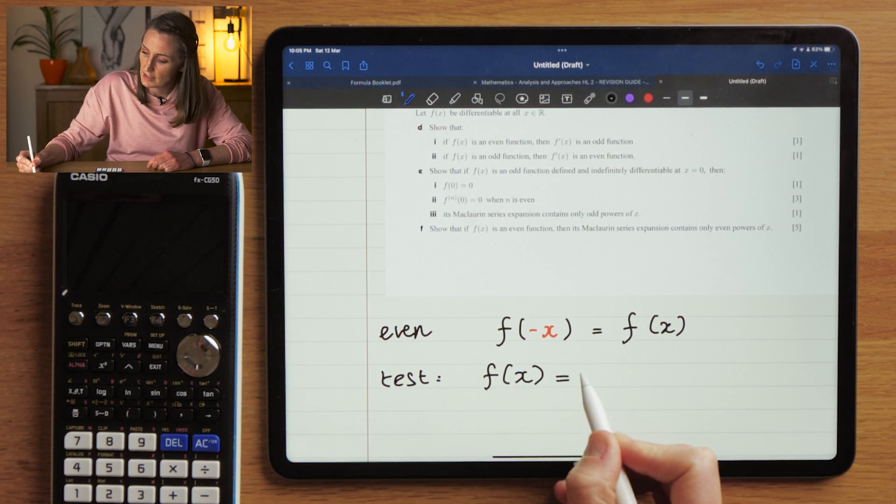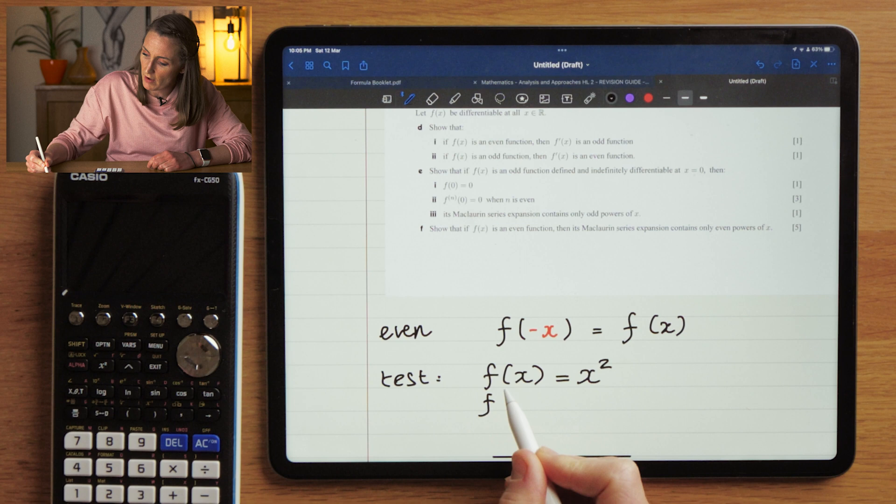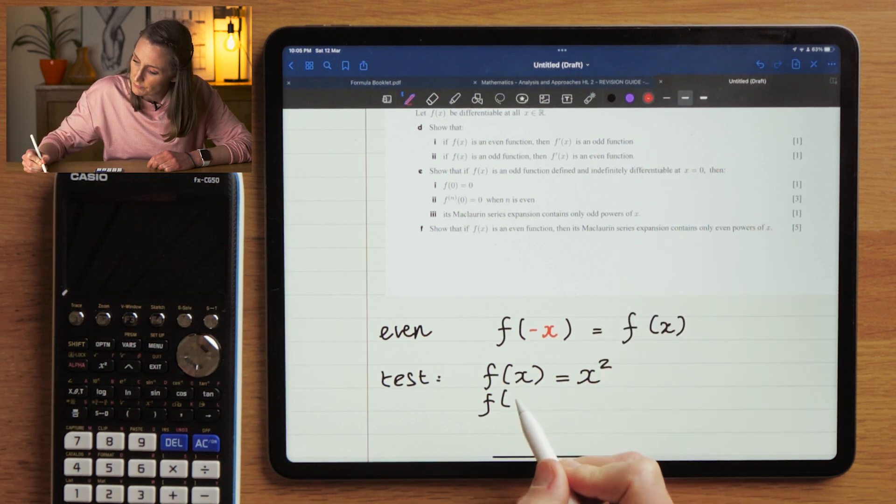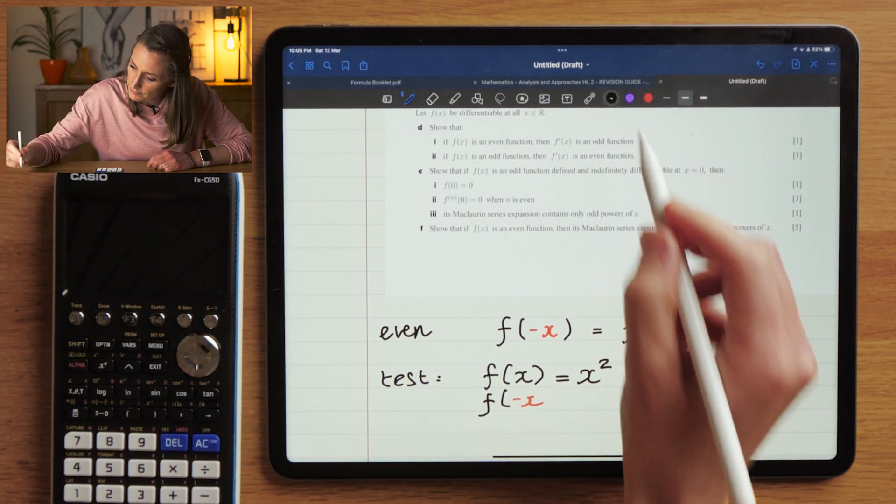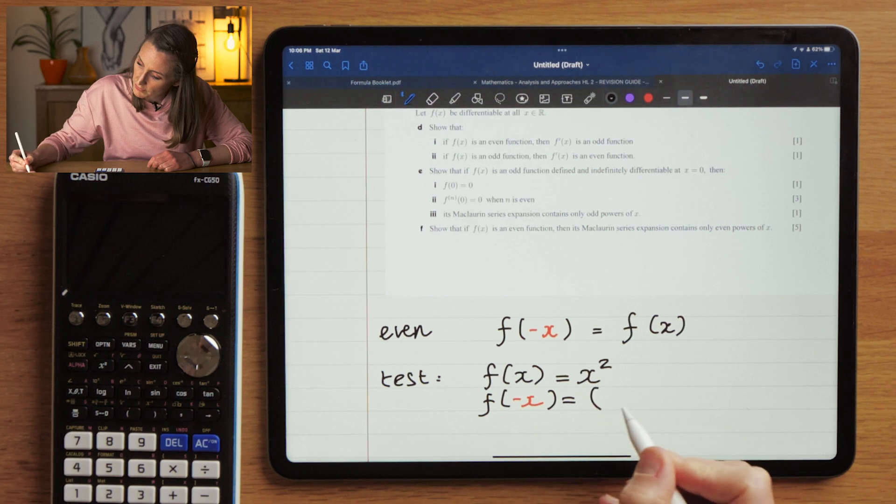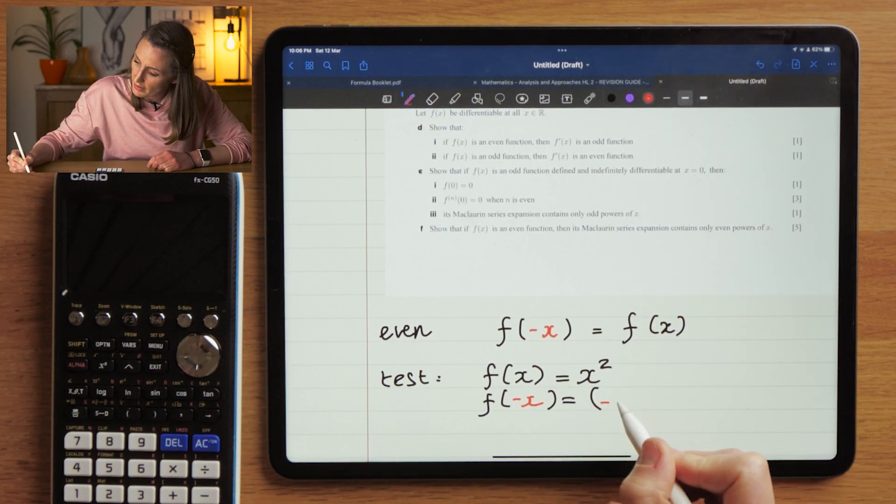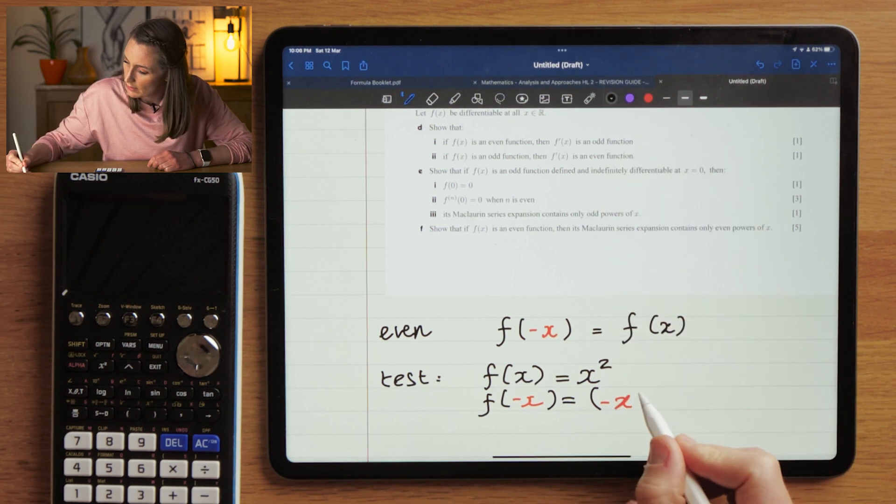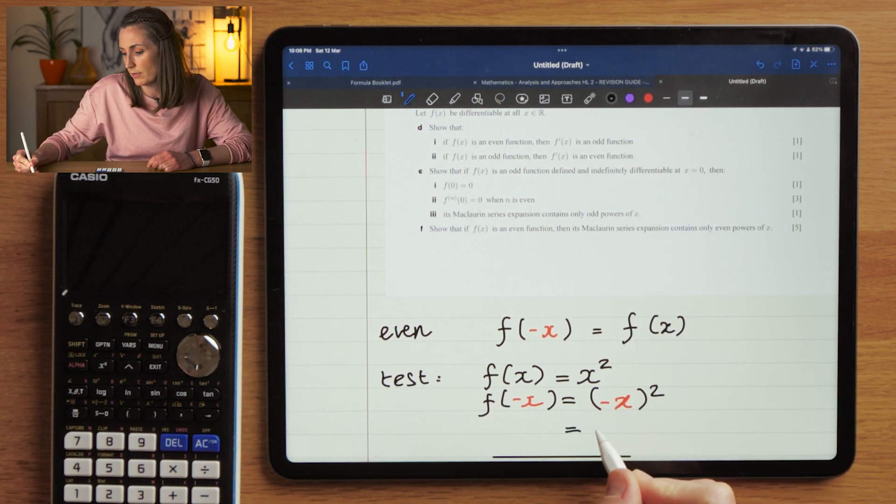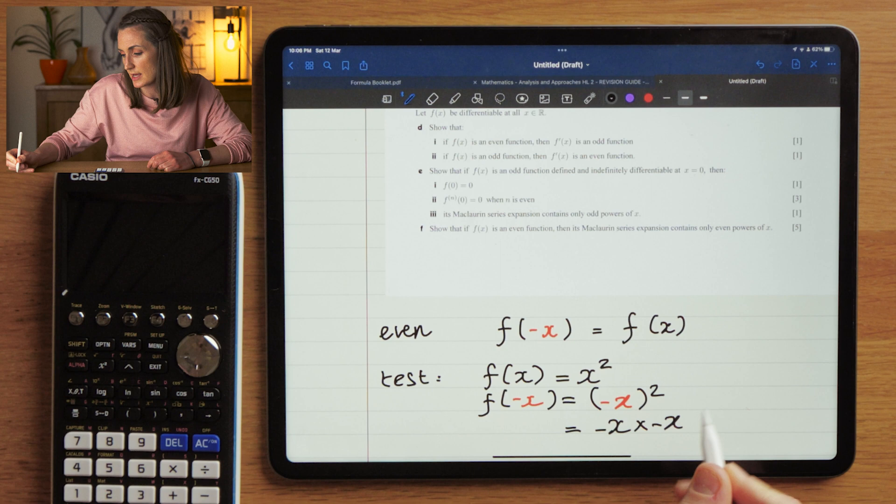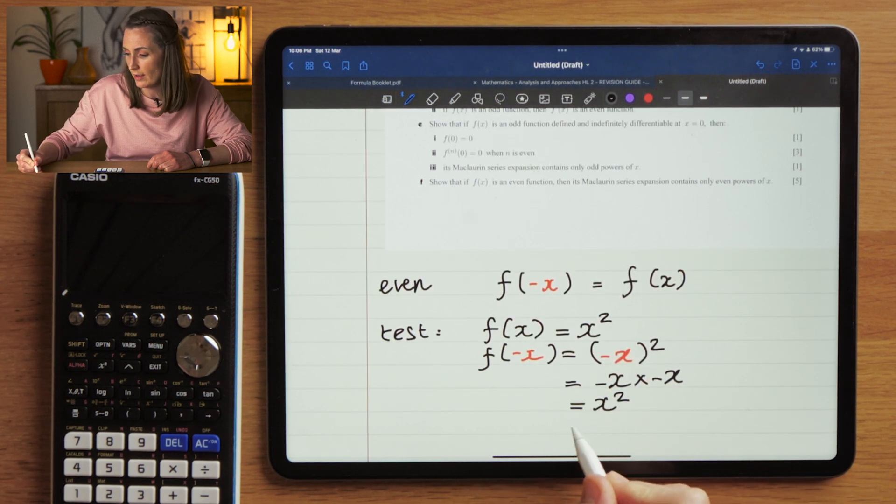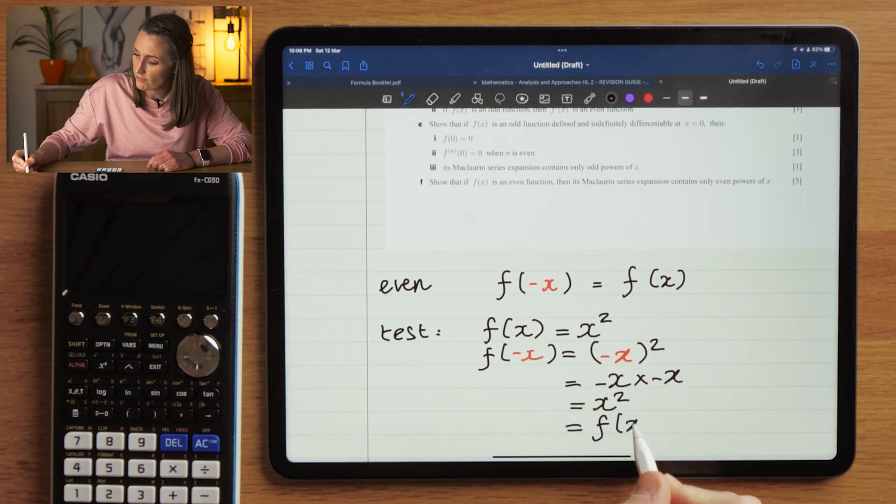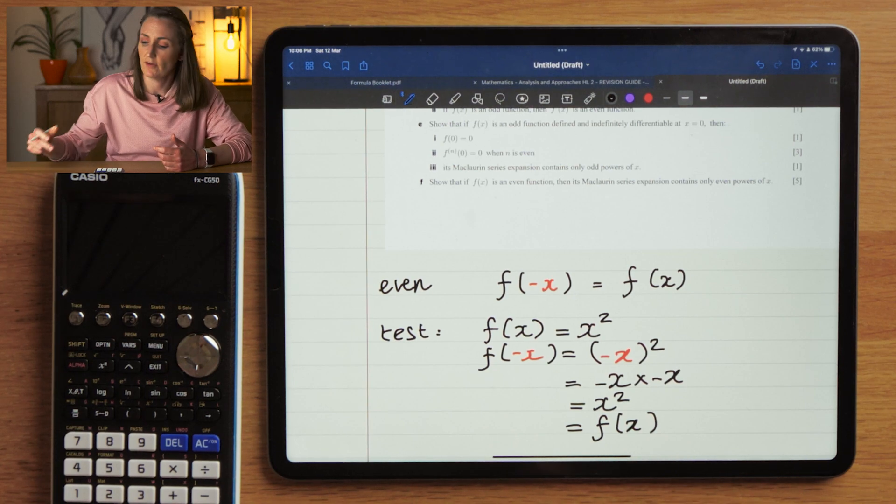If I replace x with minus x here, okay, what effect would that have? Well, I would have minus x squared, but that would be minus x times minus x, which would end up being x squared, which is still f of x.